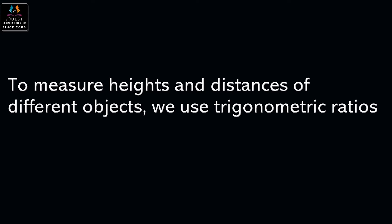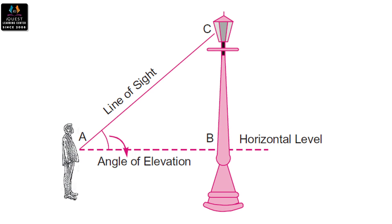To measure the height and distance of objects, we use trigonometric ratios. In this picture, there is a person looking at the top of a lamp post, in which AB is the horizontal level — the line parallel to the ground passing through the observer's eye. AC is known as the line of sight, and angle A is called the angle of elevation.